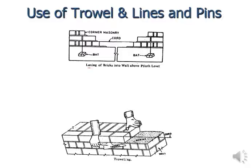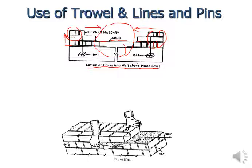This shows how bricks are laid above the plinth level. First, the brick pad is placed, then a cord is placed above to give horizontal alignment. You must start brick laying from the corners — that is the most important aspect of brick masonry. It is not recommended to start from the center; first lay the corners and then come toward the center.